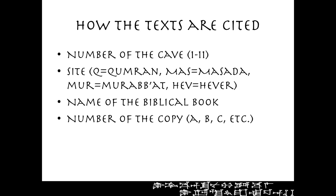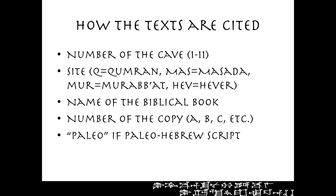After the book name comes the number of the copy. If they found the book of Isaiah in one scroll they'd call that 'a', a second Isaiah would be 'b', a third 'c', and so forth. Finally, if one of the scrolls is in Paleo Hebrew script, they write 'paleo' in the name. For example, '1Q Isaiah a' means it was found in cave one, Q represents Qumran, it's the biblical book of Isaiah, and it was the first scroll of Isaiah found. '1Q Isaiah b' would be the second Isaiah scroll, and '1Q Paleo Isaiah a' would be Isaiah written in Paleo Hebrew script.